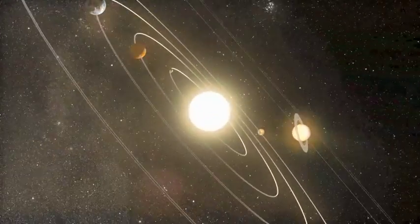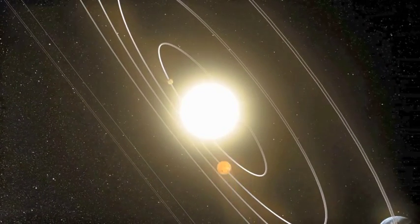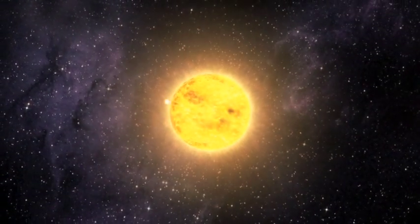It takes Earth 365 days to orbit our sun once, but it only takes this planet 2.2 days.